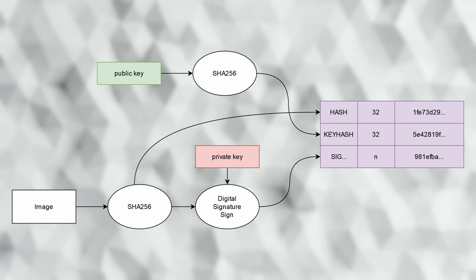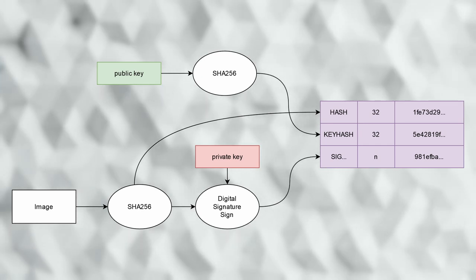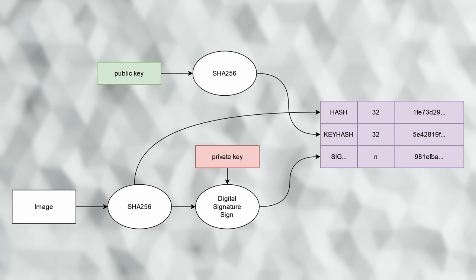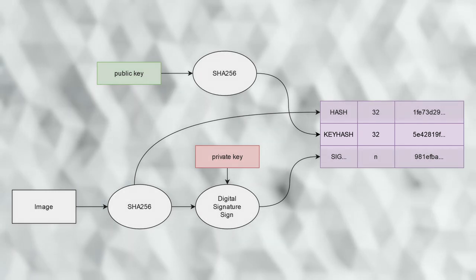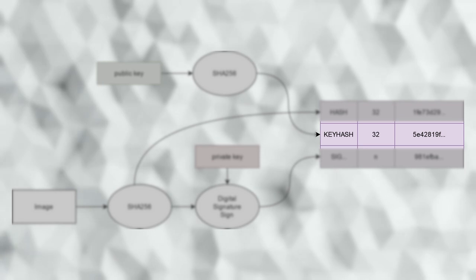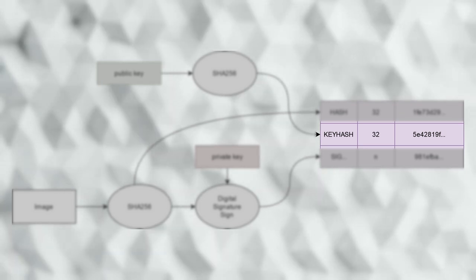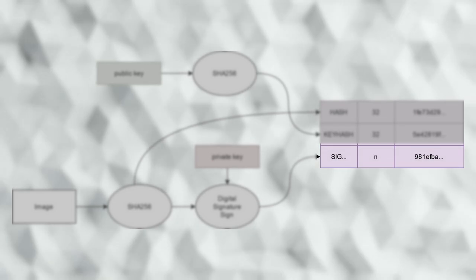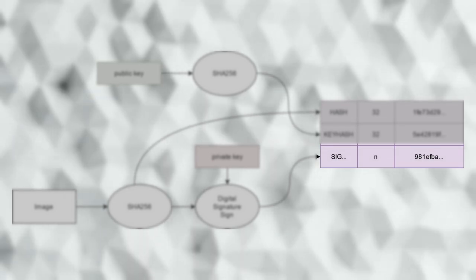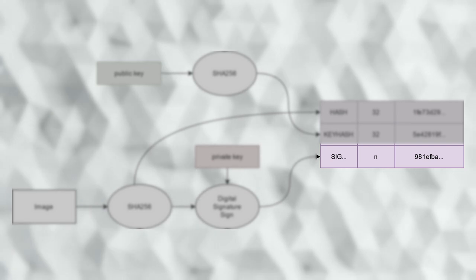However, we also need to tell MCU boot which signature we will use. To do this, we will take the public key we are using and run it through the hash function. We create a TLV entry with a tag of keyhash, hex01, and the hash bytes of this output. Then we follow this with another TLV entry, and a tag appropriate for the digital signature algorithm we are using.